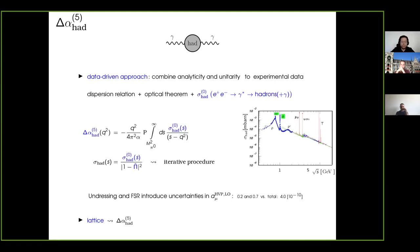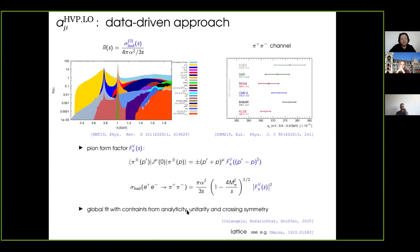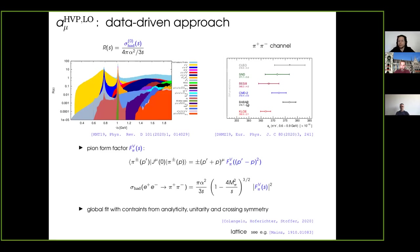You can build the R ratio, which is the cross section divided by the e+ e− into mu+ mu− point-like cross section. This is the data that you have to integrate in the small Q squared region — from zero to 2 GeV — this being the dominant contribution. The kernel suppresses higher energy. Most of the contribution is coming from the pi pi channel, basically the rho channel. If you look at the pi pi contribution, these are various experiments entering the standard model prediction, and what you observe is that the most accurate experiments, KLOE and BaBar, both using initial state radiation processes, differ at the three sigma level.